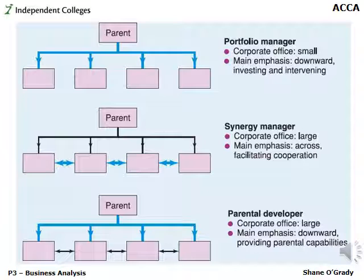The three concepts Johnson, Scholes and Whittington discuss are the portfolio manager, the synergy manager, and the parental developer. One of the simplest points is that you must adopt the right type of strategy. For example, if the company you're acquiring is a perfectly well-functioning company engaged in commercial activity you don't fully understand, you're far better off just being a portfolio manager — there's no point getting involved in a business where you can't contribute much and won't add value.